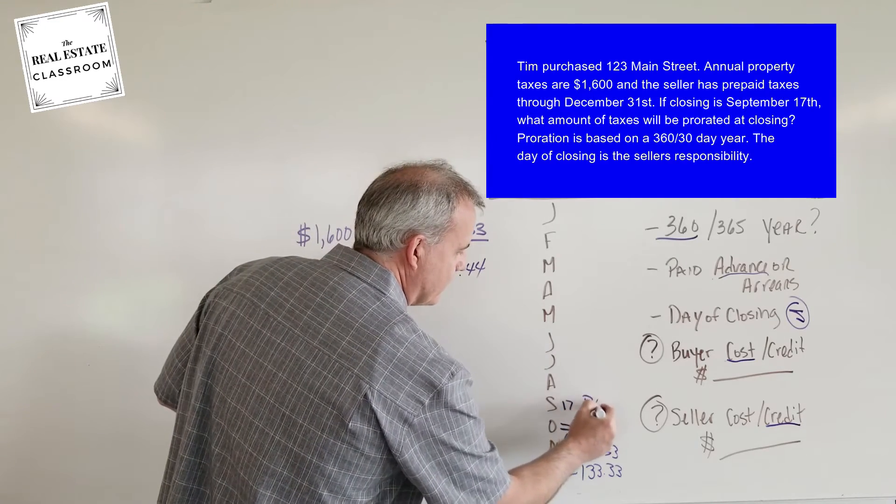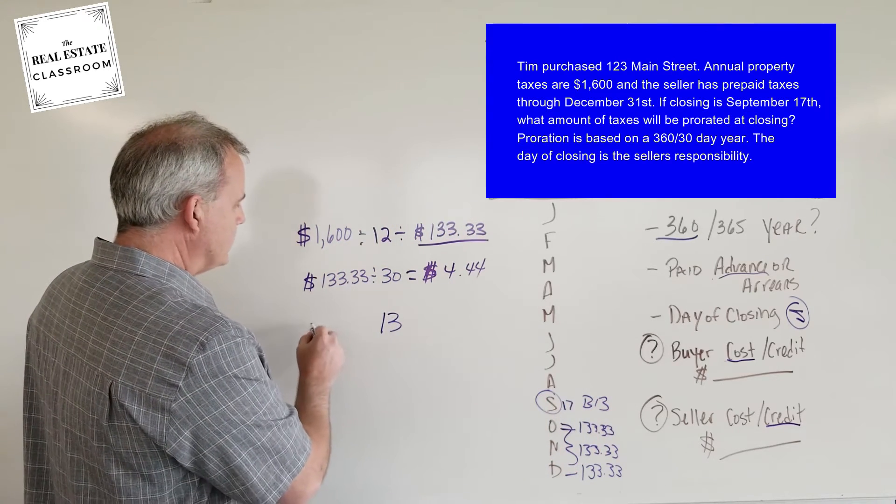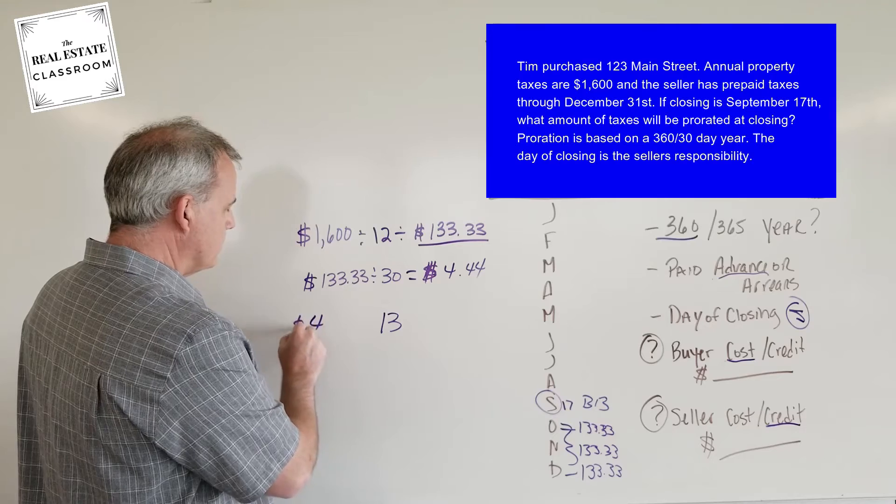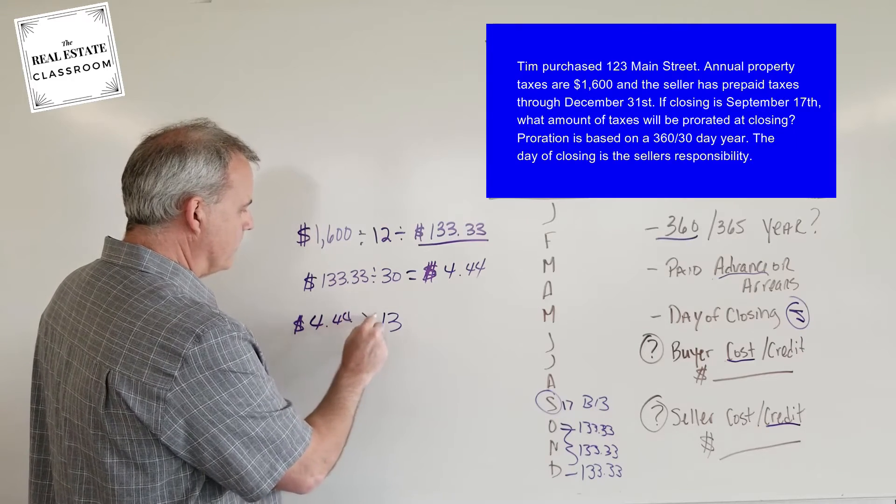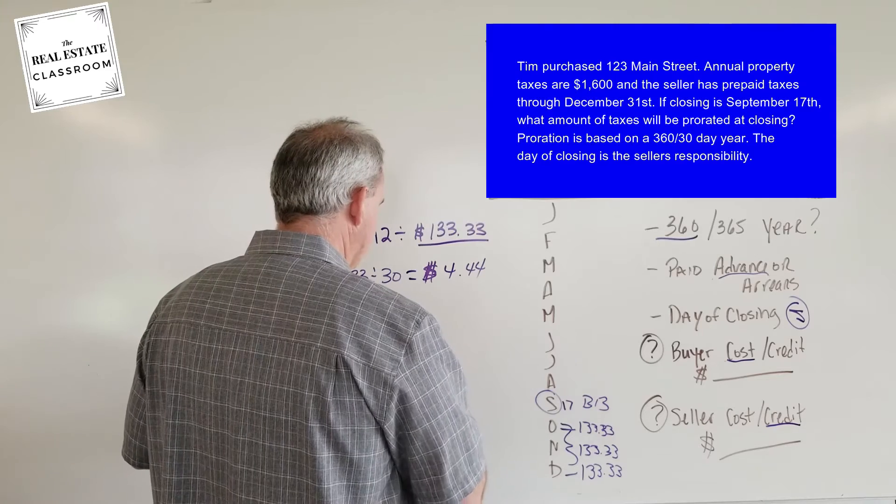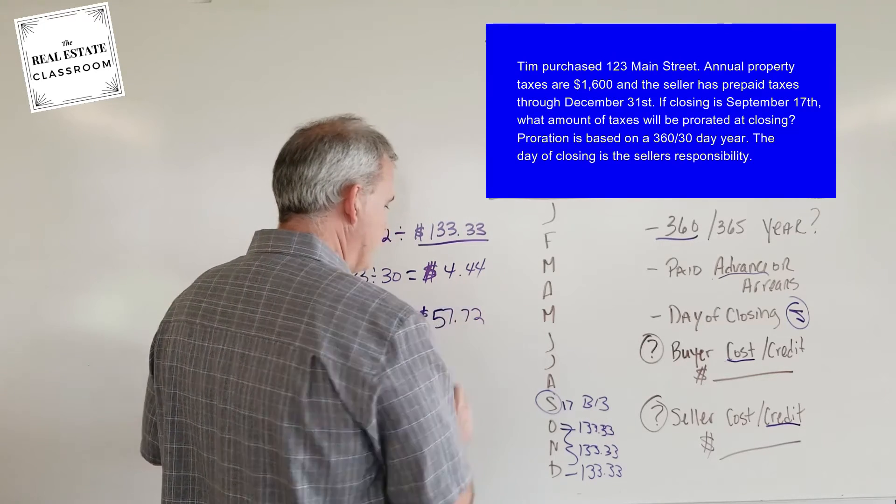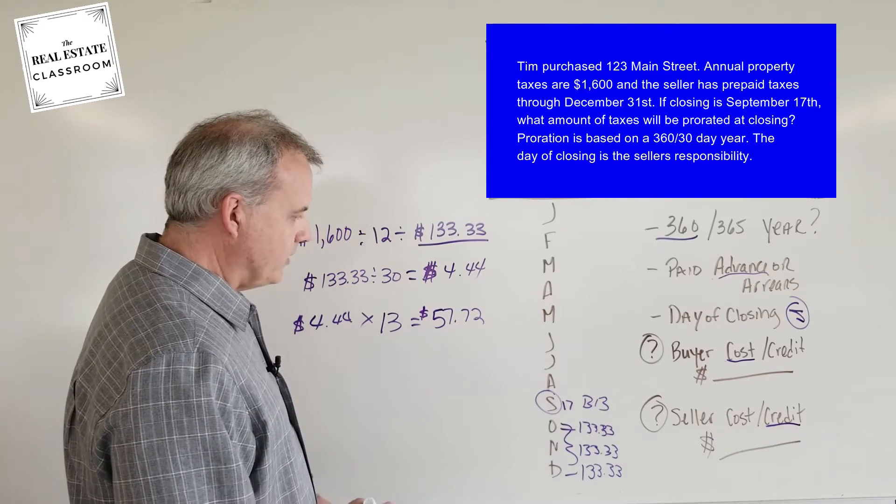The buyer is responsible for 13 days in September. So we're going to take $4.44, and we're going to multiply it by 13. And when we do that, that's going to give us a total of $57.72.